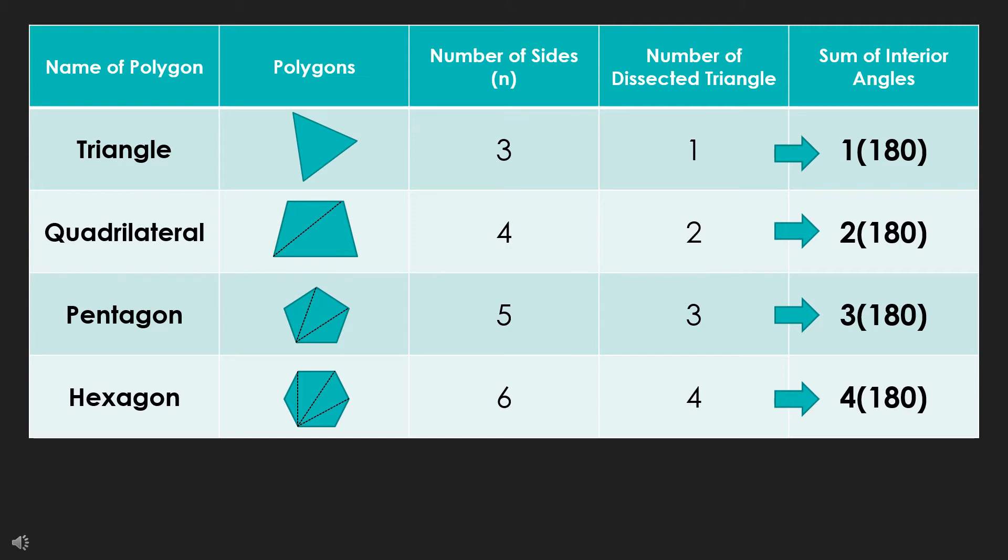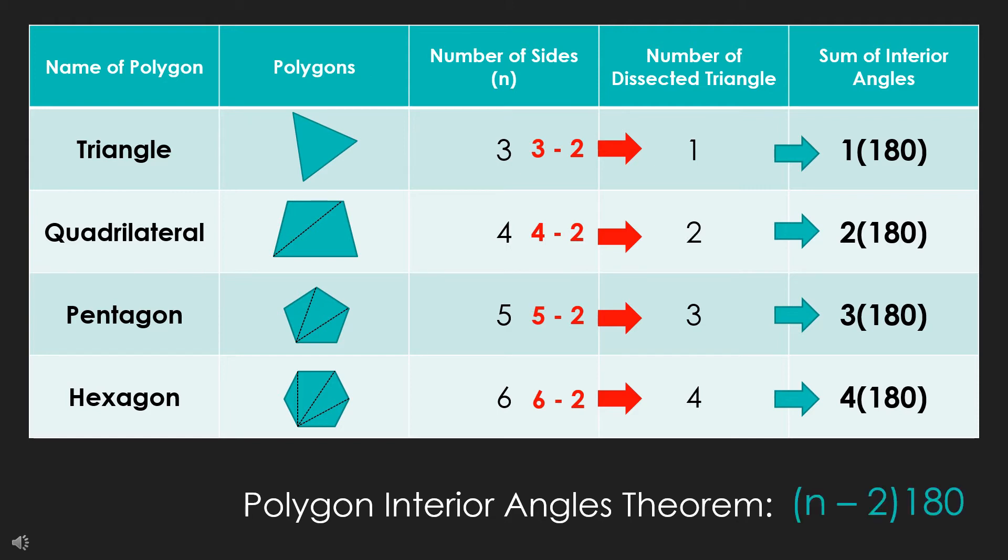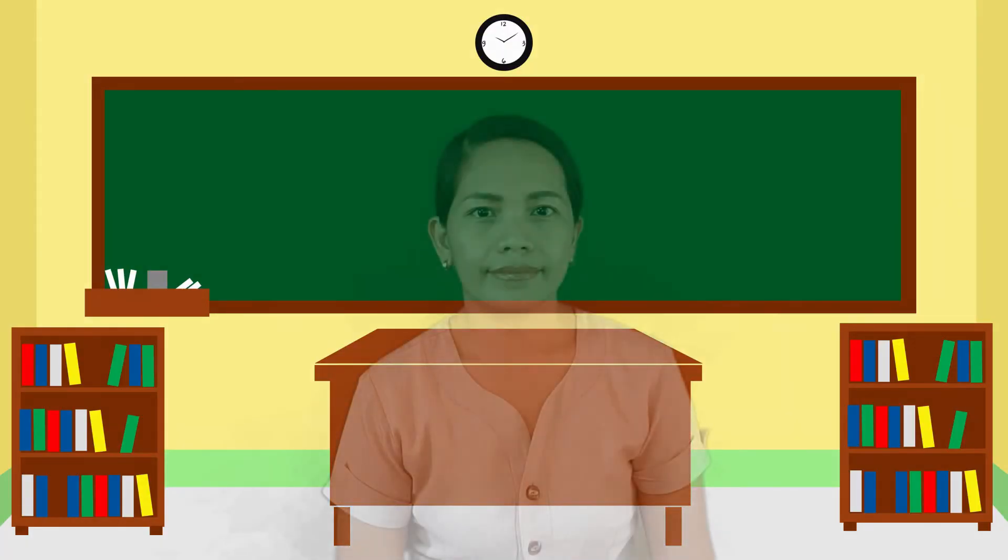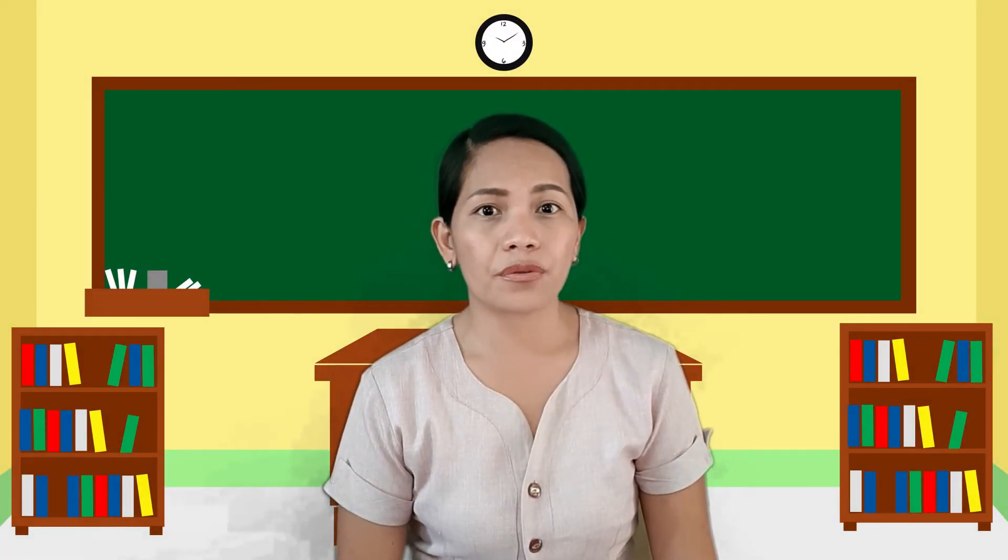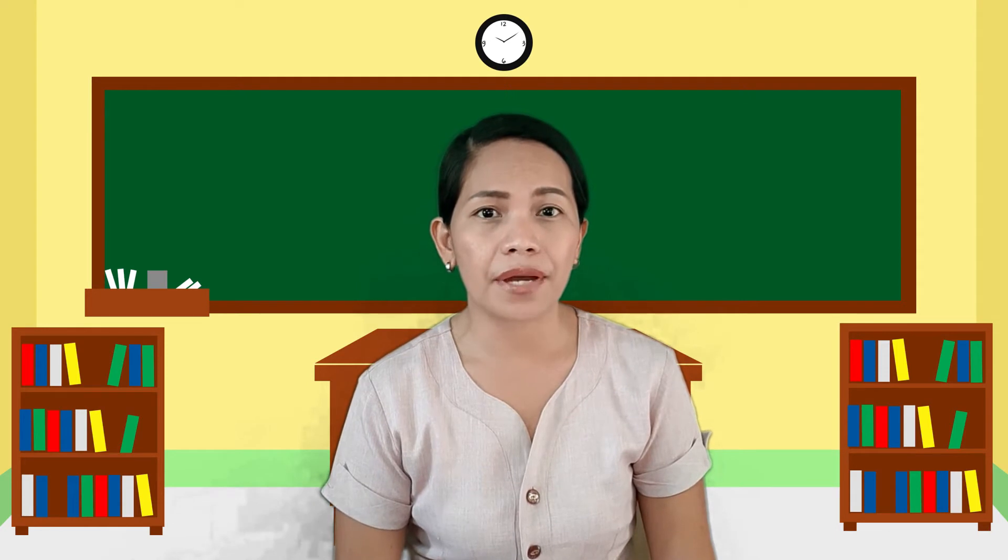And a pattern can be seen. If you can observe, the number of triangles is actually the difference of the number of sides and two. Thus, polygon interior angles theorem gives us the formula of (n - 2) × 180 to get the sum of the interior angles of any convex polygon.